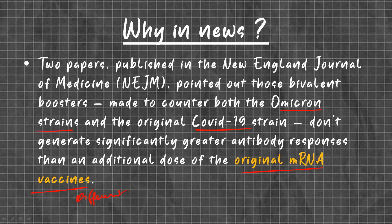As stated previously, our memory B cells during a secondary infection act effectively only on the same strain of virus, but when there is a change in strain, they are less effective. That is why researchers recommend vaccination with the original mRNA vaccines.